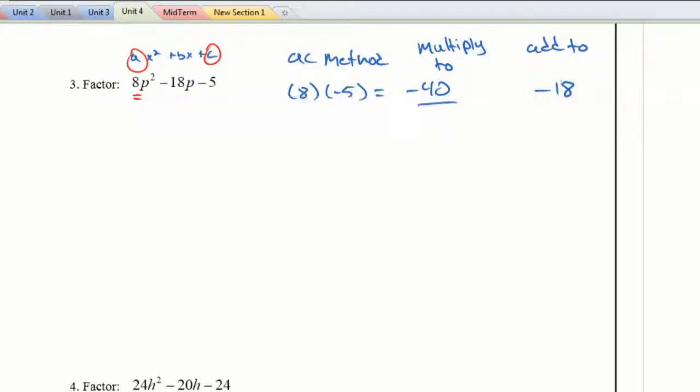40, yeah, that's about it for now. If I need to add to negative 18, Ava's got it for us. Thank you, Ava. We have negative 20 and we multiply it by positive 2. That's going to give us negative 40. And if we go negative 20 plus 2, that's negative 18. So the factor we're going to use is 20 and 2.